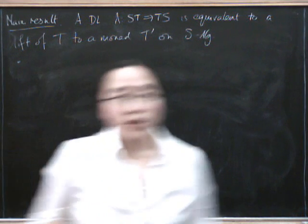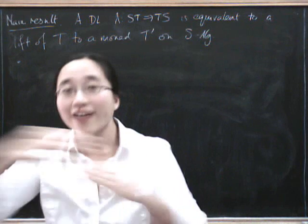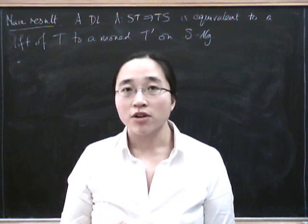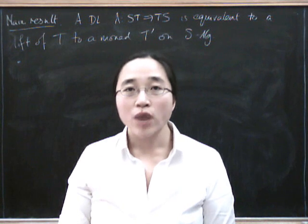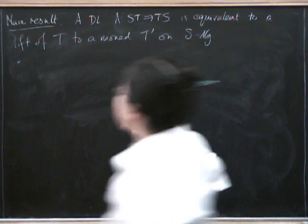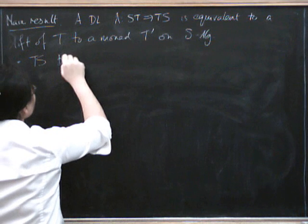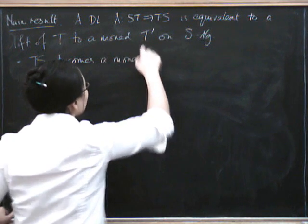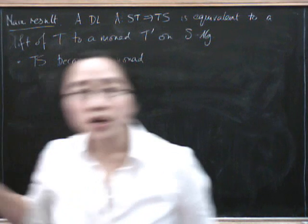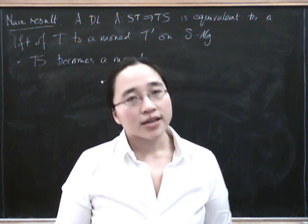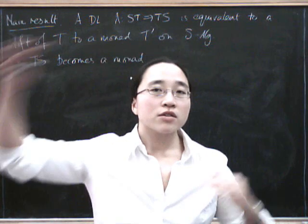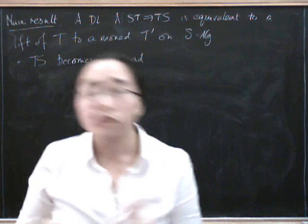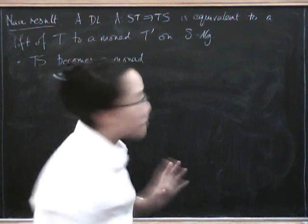Remember that the other part of this story that we like, the sort of subplot or parallel plot to the story, is that T∘S in our example became the free ring monad. So it gave us a way of constructing rings. And what we're going to do here is say that T∘S becomes a monad. Moreover, the algebras for T∘S were rings. And also, when we lift the free group monad to the category of commutative monoids, it turns out that the algebras for that are also rings, which is really rather exciting, frankly.